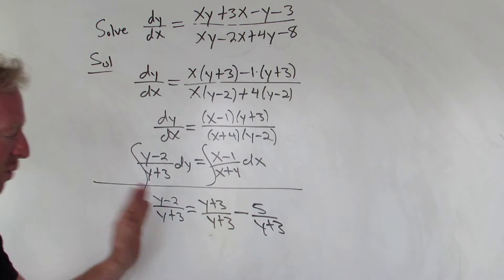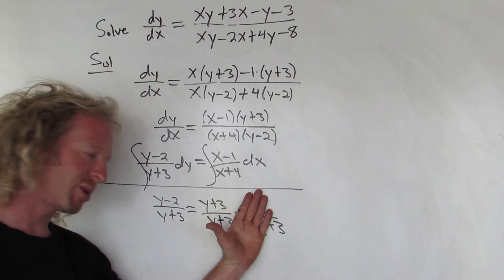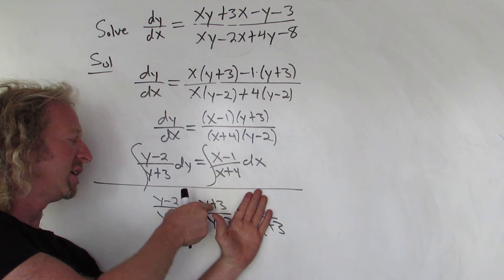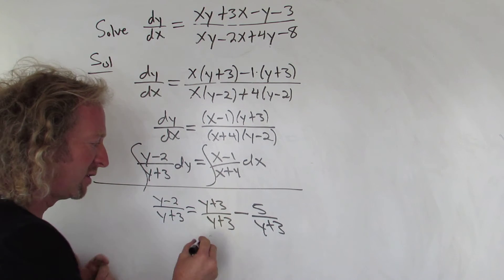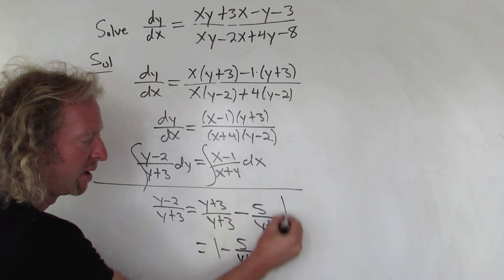So you write down what you want and fix it later. We wanted a (y+3) there so we put it there, and then how do you get from three to minus two? You subtract five. And this becomes 1 - 5/(y+3).